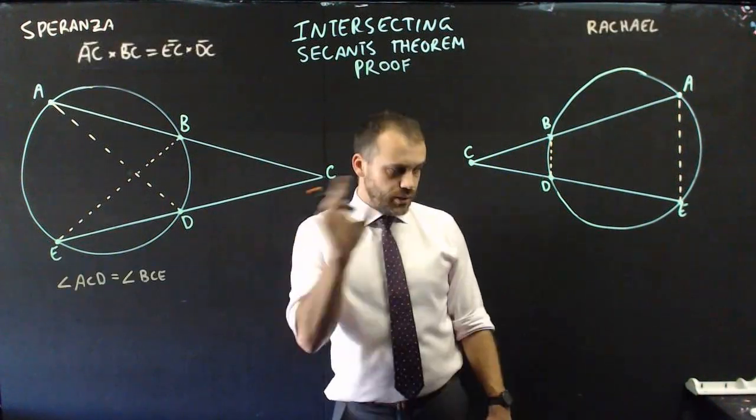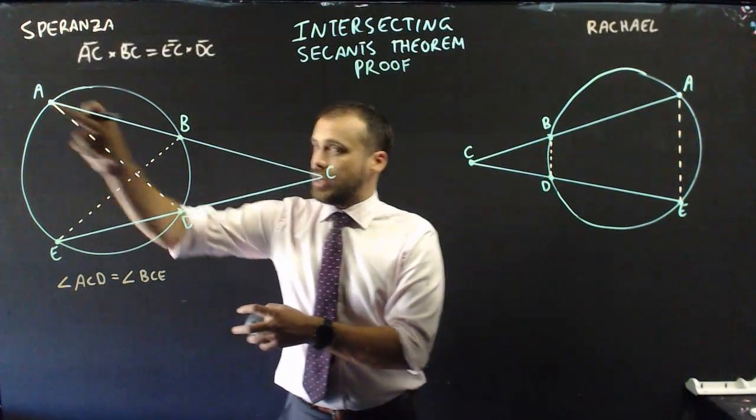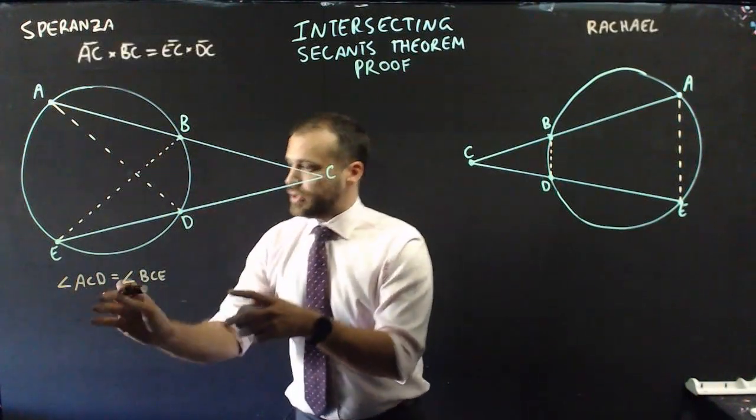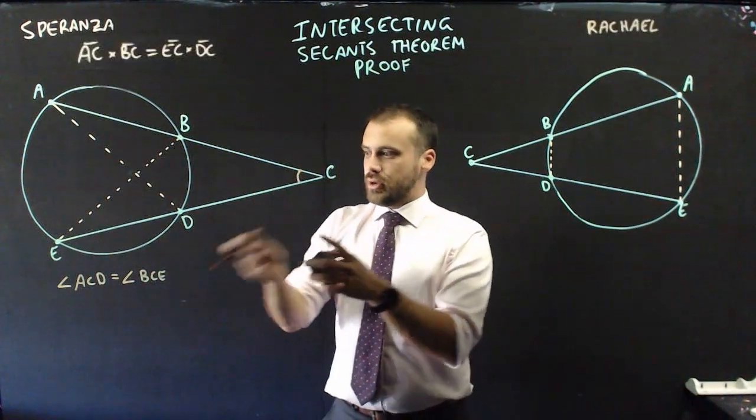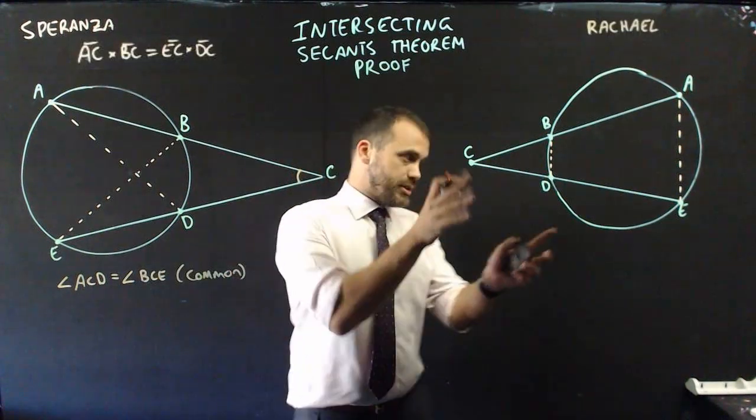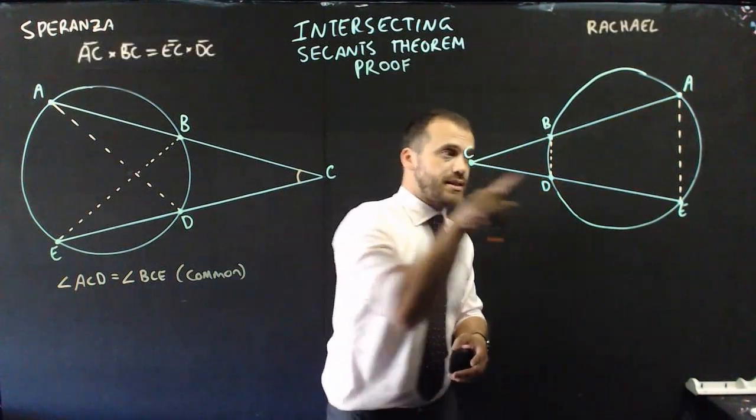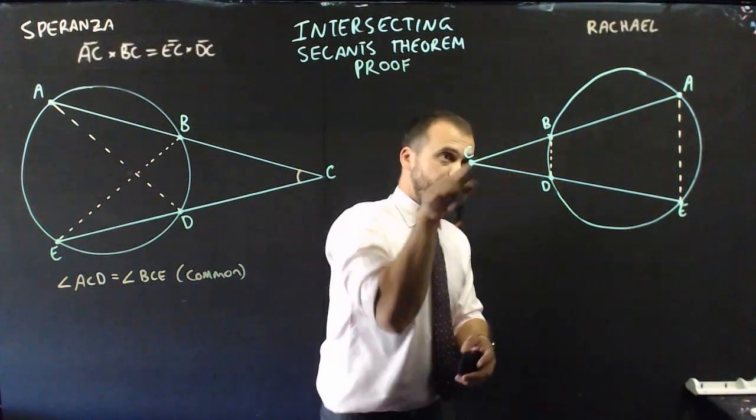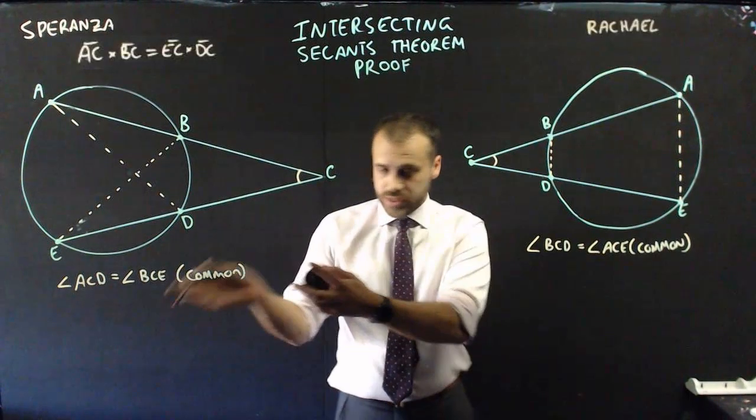Which one do you like? Now, our next step feels really similar because I said that angle ACD of that triangle is equal to angle BCE of that triangle because they're common. Rachel did the same thing here, and she said that angle BCD and angle ACE of that triangle and that triangle are the same because they're common. So far, so good.